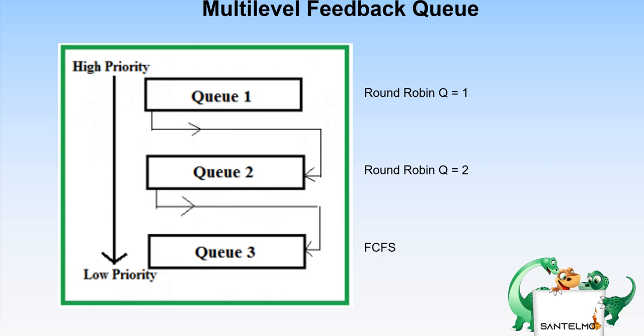The above implementation may differ. For example, the last queue can also use round robin scheduling. In fact, each queue can use any of the six basic CPU scheduling algorithms.